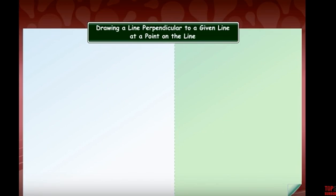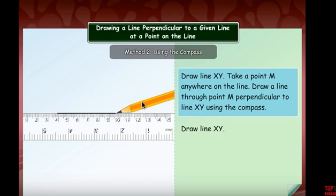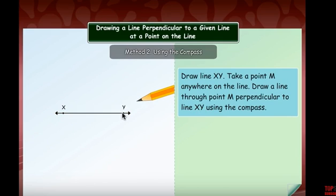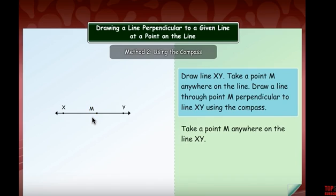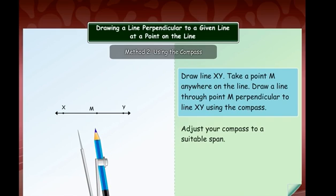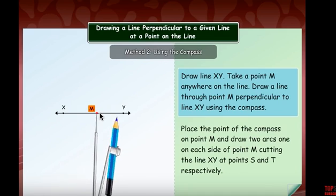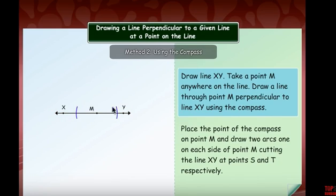Now drawing a line perpendicular to a given line at a point on the line using a compass. Draw a line XY and take a point M anywhere on the line. Adjust the compass to a suitable span, place the compass point on M, and draw two arcs cutting each side of the line — one on each side of M along XY.